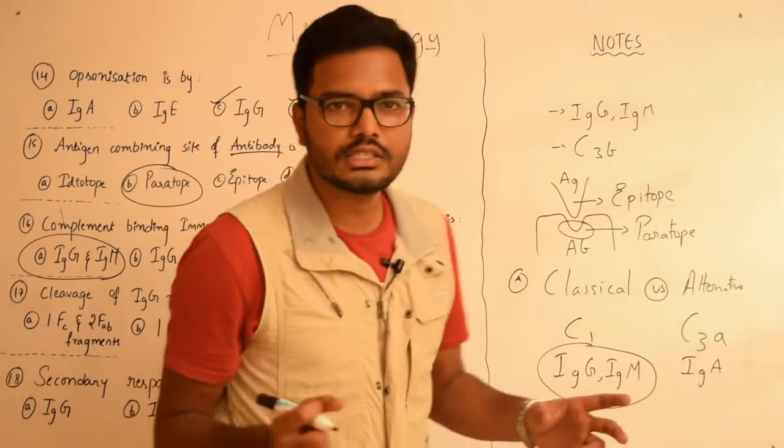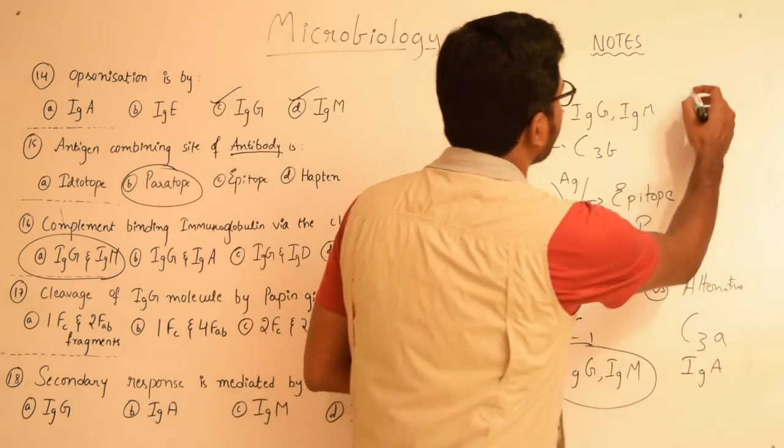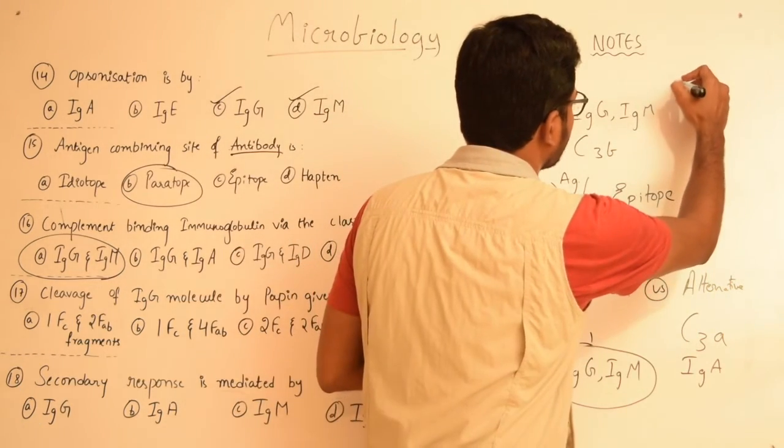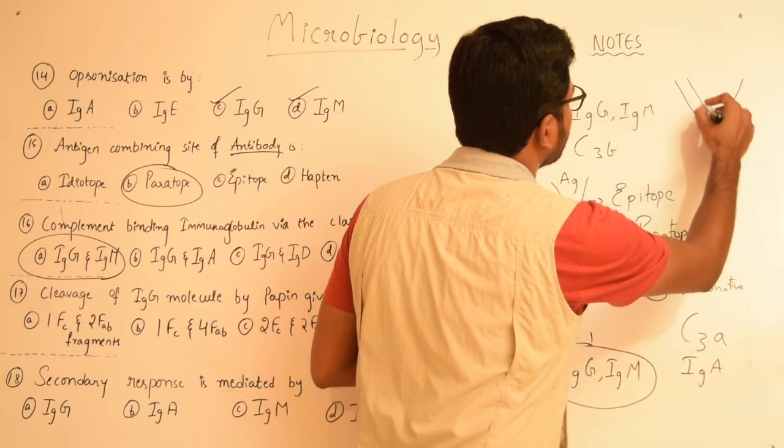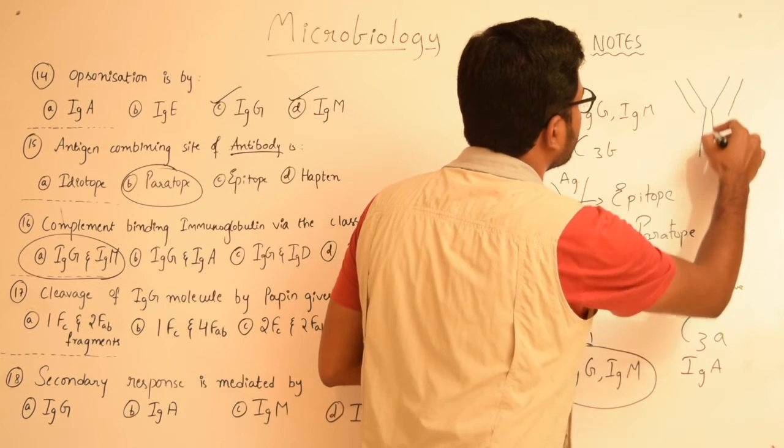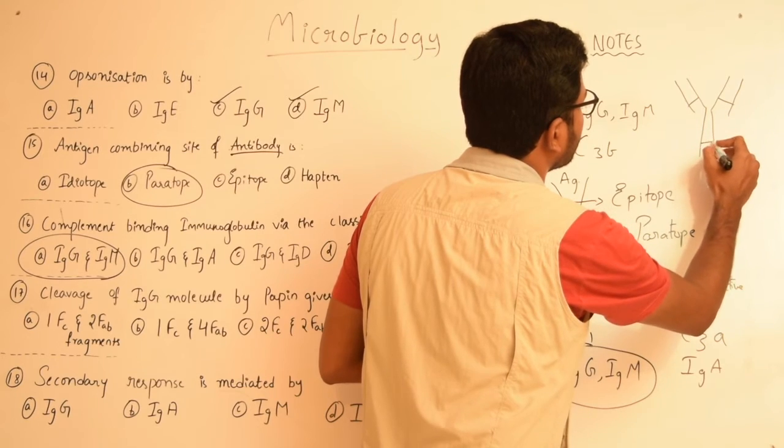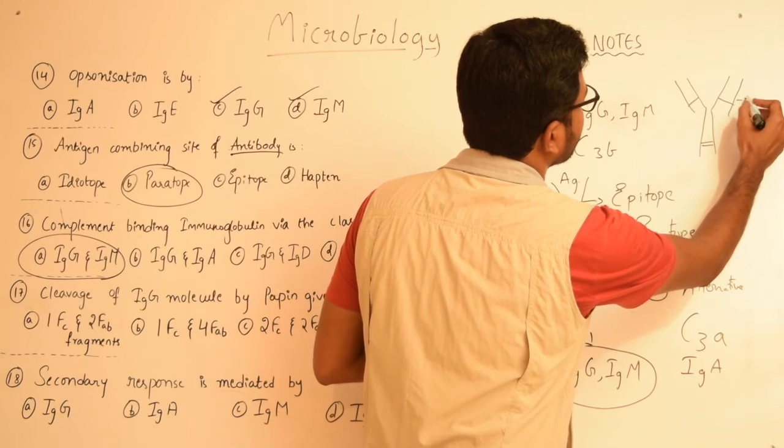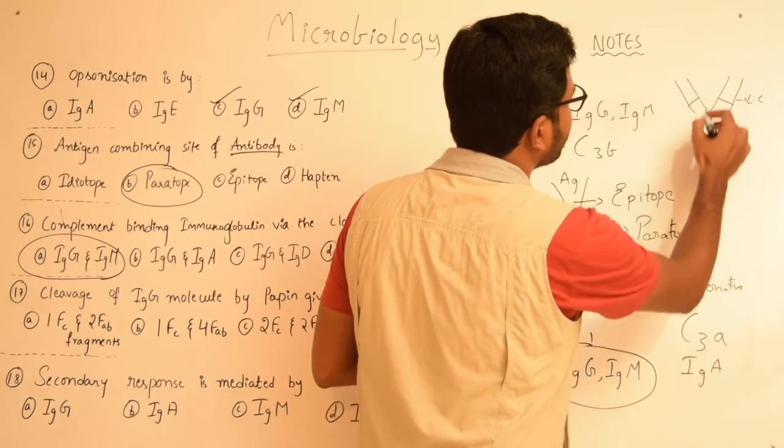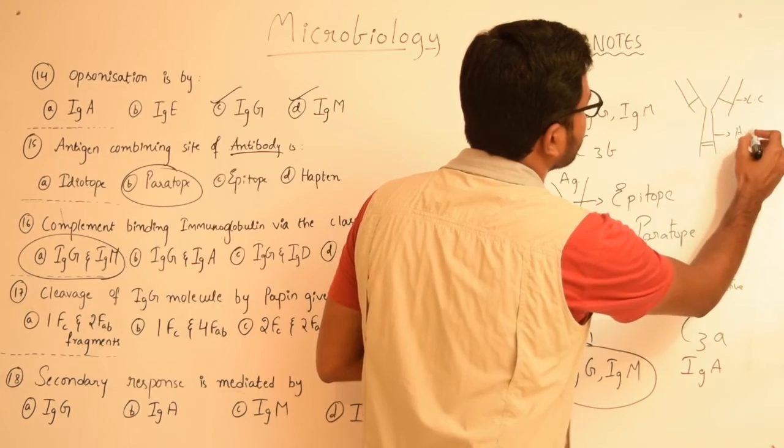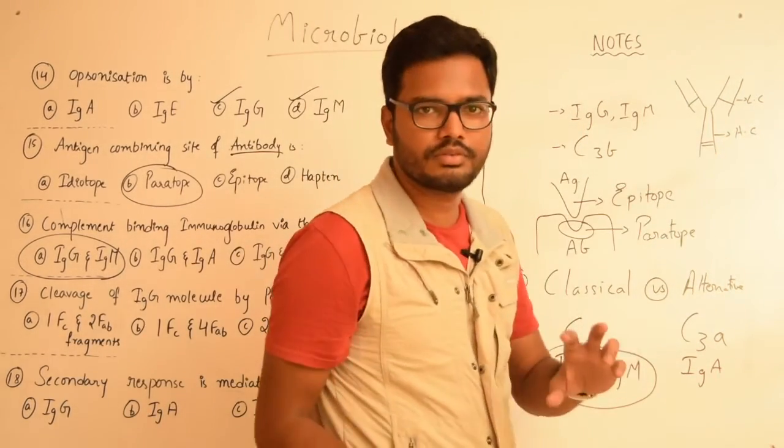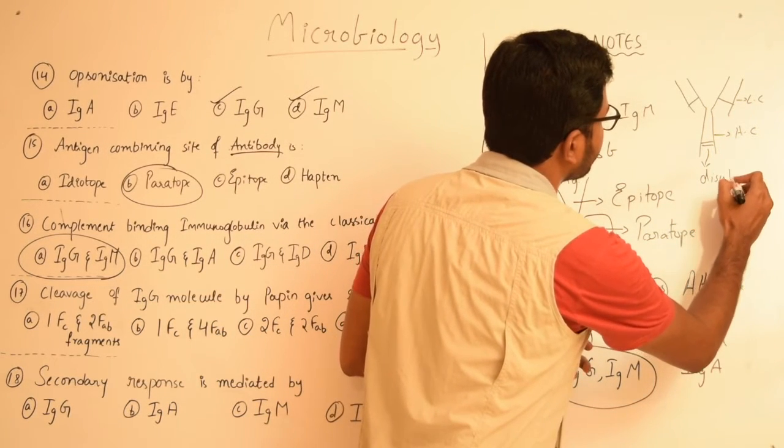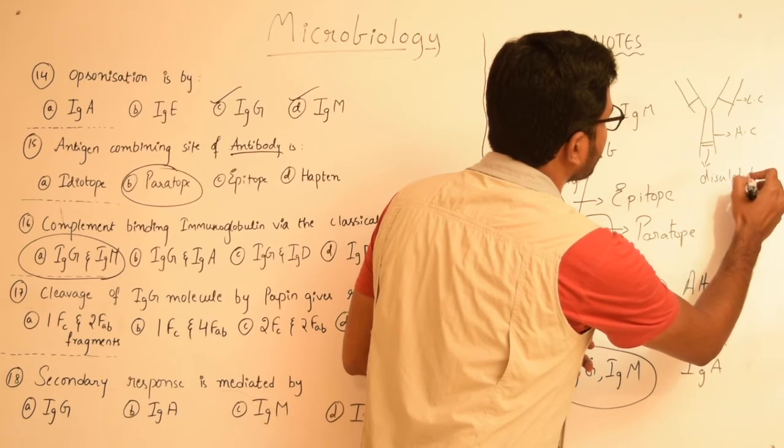As I said, any antibody has two light chains and two heavy chains. These lateral aspects are the light chains whereas the central two chains are heavy chains, and these heavy chains are bound together by disulfide bonds.